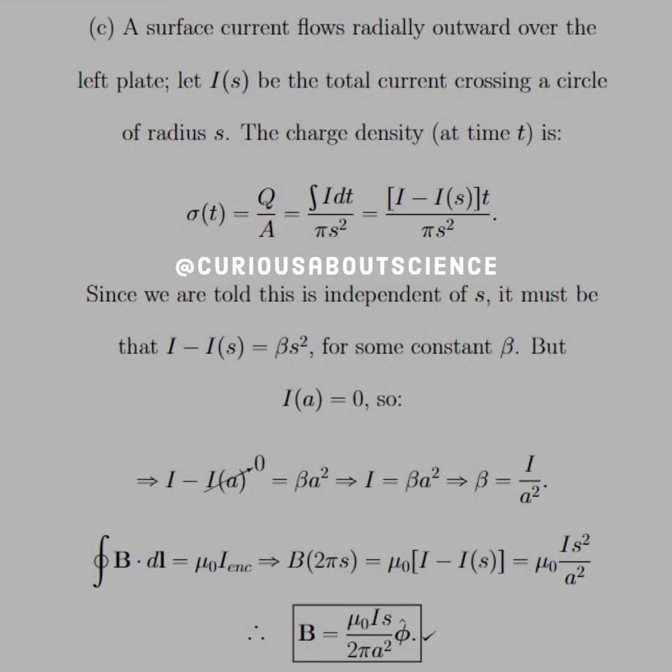And if we plug that into the difference of the currents, what we see is I minus I(s) is equal to I times s² over a², which we've seen this setup before. So if we want to set up this using Ampere's law and find the magnetic field, what we see is that we have the line integral of B is equal to μ₀ I enclosed, which again, a loop, so 2πs is equal to μ₀ the difference of the currents, which we just saw was equal to Is² over a², and we get the same thing as we did in part B. Pretty consistent, pretty nice. Again, I'll have a little more explanation for you in the description because there's a reason why this was set up this way.